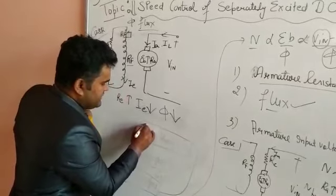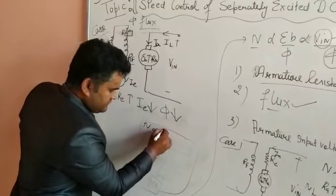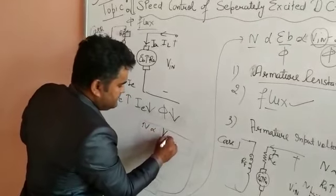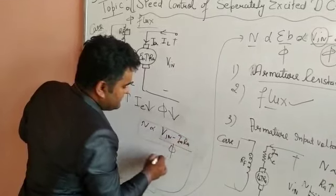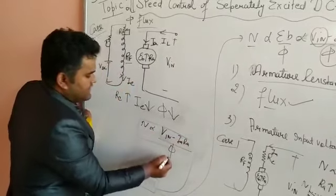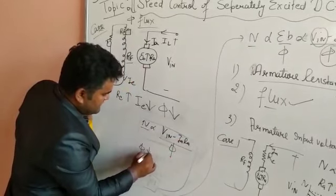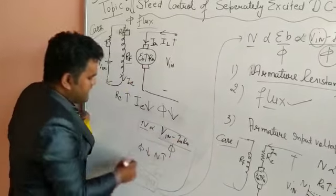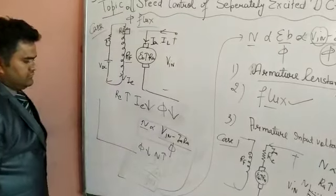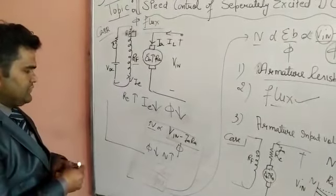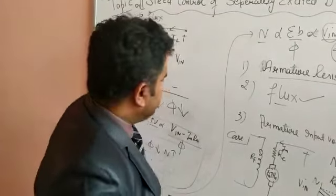We know that speed = (E_B minus I_A·R_A) / φ. If flux decreases, then speed increases. Hence speed can be increased in this case. With this method you can increase the speed to a higher level.